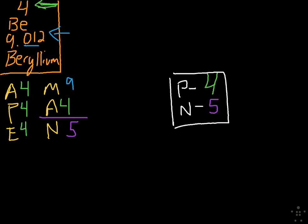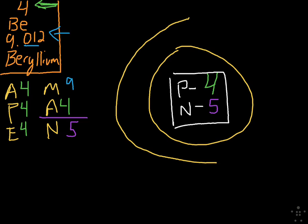All right, so the next thing we're going to do is we are going to draw the electron cloud. The electron cloud is the cloud outside the nucleus. All right, now you're probably wondering, why did I draw two rings?